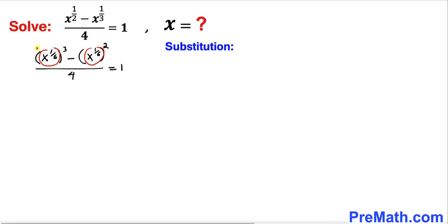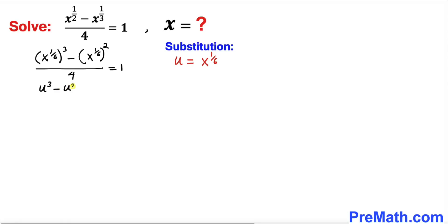We can see that x^(1/6) appears in both terms, so let's make a substitution. Let u equal x^(1/6). Then our equation becomes u^3 minus u^2, everything divided by 4, equals 1.